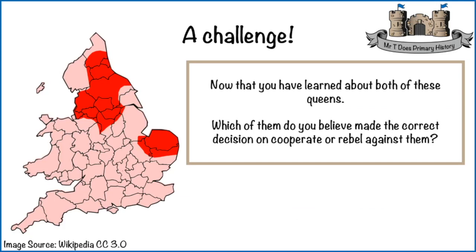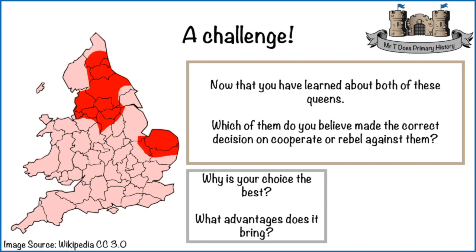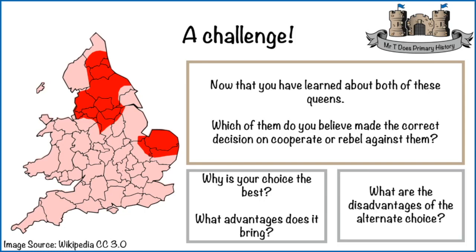Now let's finish with a challenge. Now that you've learned about both of these queens, which of them do you believe made the correct decision — cooperate or rebel against the Romans? There are two parts: number one, when you've made your decision, why is your choice the best and what advantages does it bring? And then number two, what are the disadvantages of the alternate choice? Have a go — discuss it with your friends. I hope you've enjoyed this series. Cartimandua is much less known about, but I think she's equally interesting to Boudicca, even though her life was very different. Hope you've all enjoyed it, and I'll chat to you again soon. Bye.